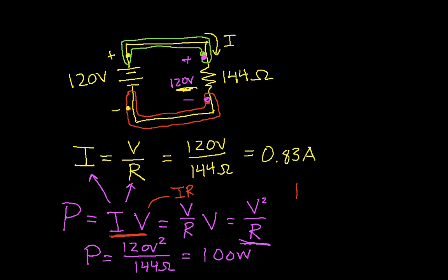So I have power, whoops, don't know what happened there. I have power is I times V, but for a resistor, V is I times R. So the power is I squared R.